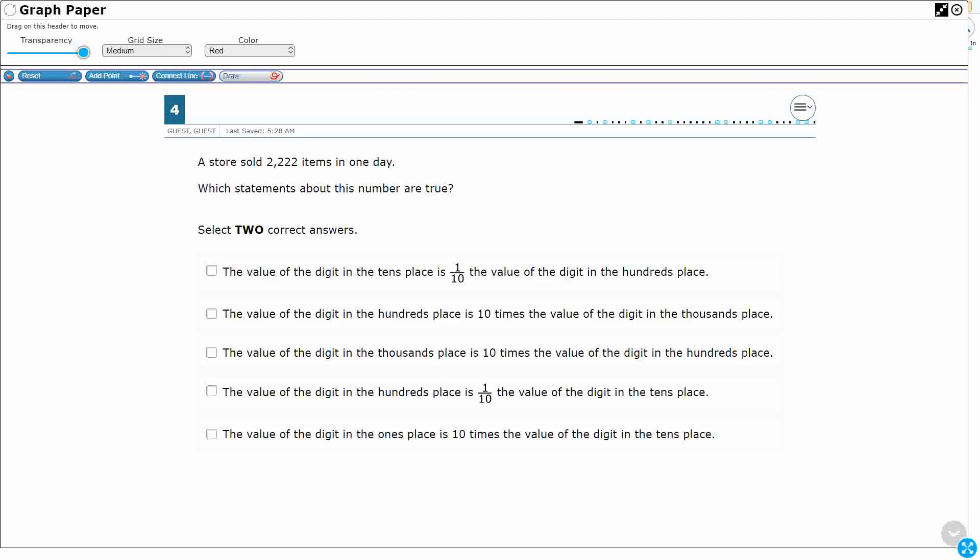Store sold 2,222 items in a day. All right, so let's make a little place value chart because it looks like all of our questions are going to be about the value here. 2,222. I'm going to just write the values here: 1s, 10s, 100s, 1000s, okay?